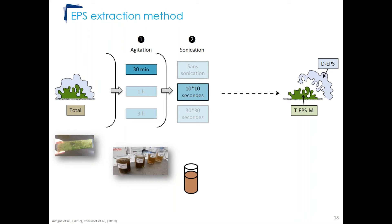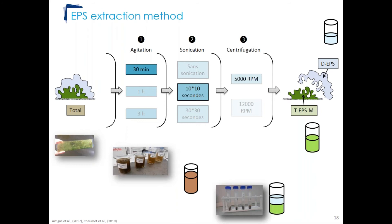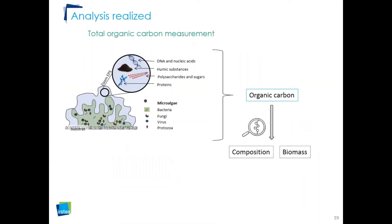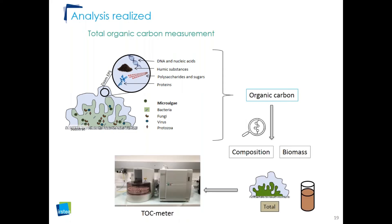To develop the extraction method, different protocols were tested. The most relevant was 30 minutes of agitation for the biofilm placed in a beaker, followed by sonication twice at 10 degrees, and finally centrifugation for 20 minutes at 5000 rpm. This allowed extraction of the DEPS fraction from the supernatant and the TEPSM fraction from the pellet. Analyses included total organic carbon, which informs about biofilm composition and biomass, measured on the total fraction using a TOC meter.